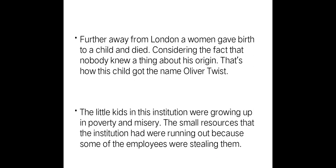After that, Mr. Bumble made an announcement that whoever adopts Oliver will be given five pounds. On seeing that, Mr. Sowerberry takes Oliver along with him. In his house there were two servants, Noah Claypole and Charlotte. Mrs. Sowerberry and these two servants did not treat Oliver well. One day Noah Claypole spoke badly about Oliver's mother, so Oliver beat Noah Claypole. After nearly a month in Mr. Sowerberry's house, Oliver couldn't tolerate the sufferings, so he ran away to London, which was some 70 miles away.